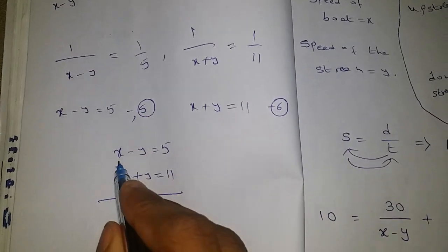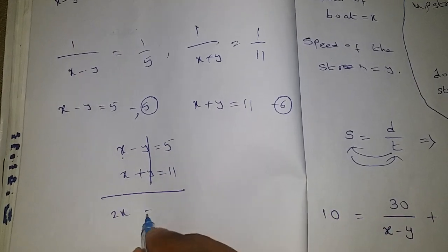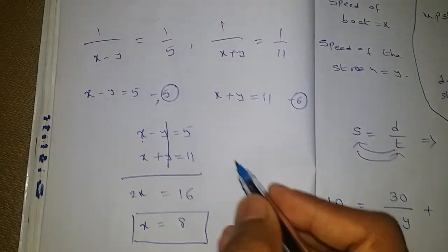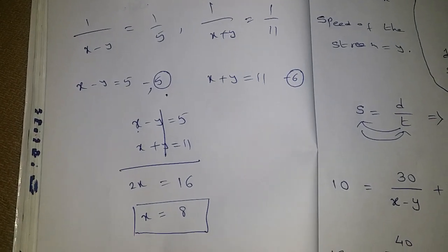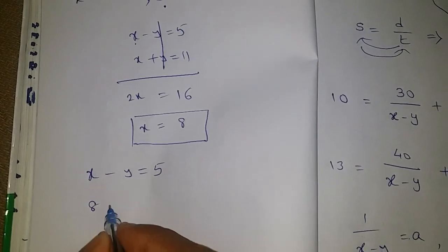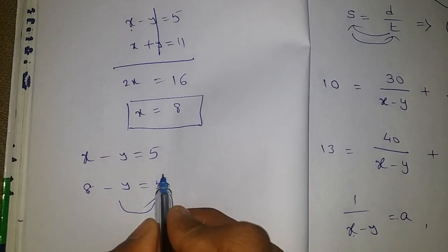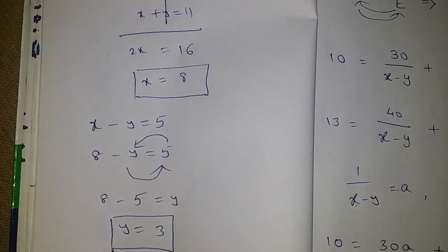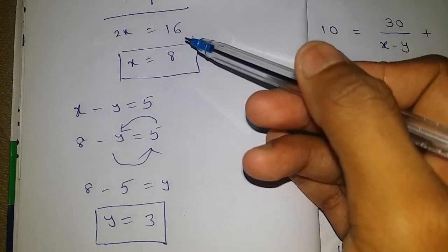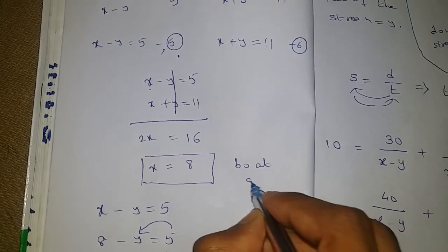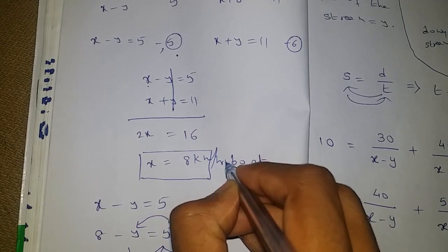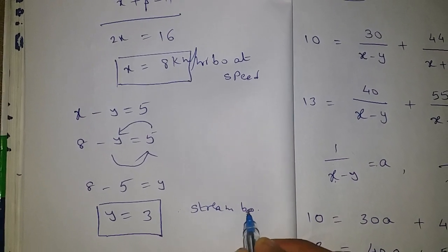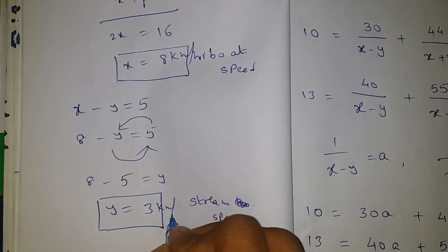Adding the two equations: x plus x gives 2x, and minus y plus y cancels, equals 5 plus 11 = 16. So x = 16/2 = 8. Substituting x = 8 into equation 5: 8 minus y = 5, so y = 8 minus 5 = 3. Therefore x = 8 and y = 3. x is the speed of the boat — boat speed is 8 kilometers per hour. y is the speed of the stream — stream speed is 3 kilometers per hour. Thank you.